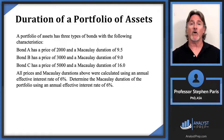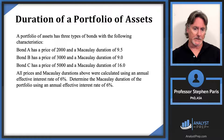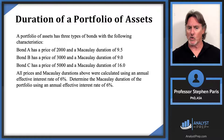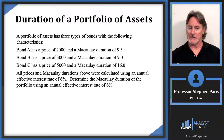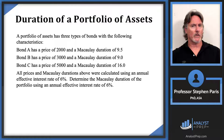The question is: what is the Macaulay duration of the portfolio at a 6% interest rate? You might naturally look at the individual Macaulay durations — 9.5, 9, and 16 — and think we need some sort of weighted average between those values. That's exactly the right line of reasoning.